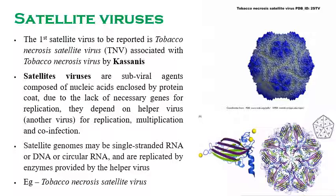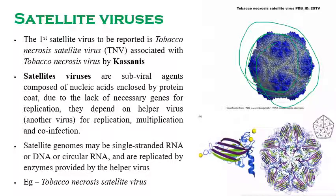The genome of a satellite virus is composed of single-stranded RNA, DNA, or circular RNA. They use the enzymes of the helper virus for replication. We can see a diagram showing a circular RNA-like particle. The best example is the tobacco necrosis satellite virus, the first satellite virus discovered by Casanis.